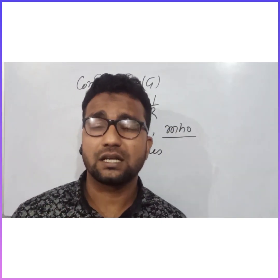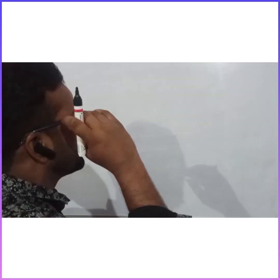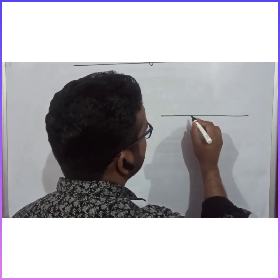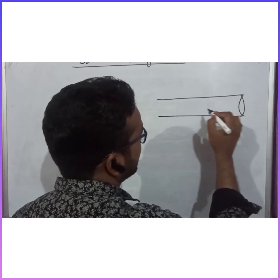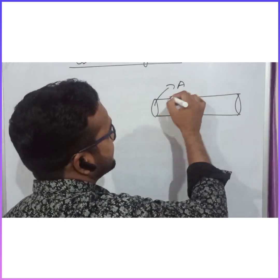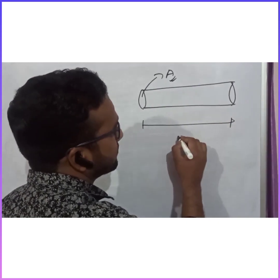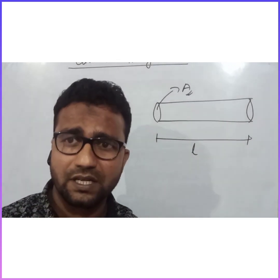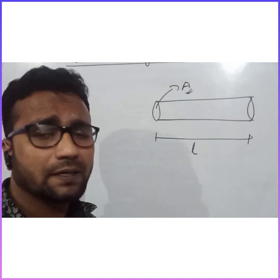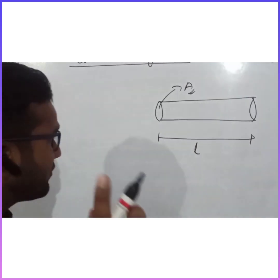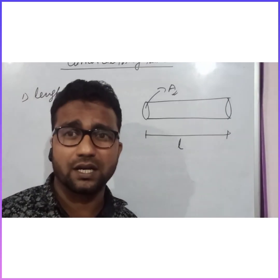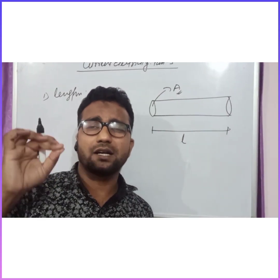Now, what are the factors on which resistance of a material depends? Simply we can say these are the laws of resistance. Suppose it is a conductor shown as a microscopic figure of a simple wire, with its cross-sectional area and length marked. According to the law of resistance, the first factor is length. The resistance of a material is directly proportional to the length of the conductor, meaning R is directly proportional to L.